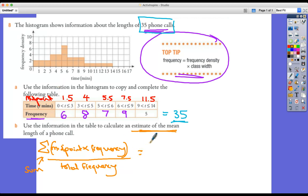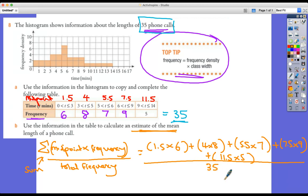So what I'm going to do then is 1.5, assuming all of these six people took 1.5 minutes on their phone calls. Add 4 times 8. I'm going to add on 5.5 times 7. I'm going to add on 7.5 times 9. We're not room 11.5 times by 5. I'm going to divide that whole thing by 35.